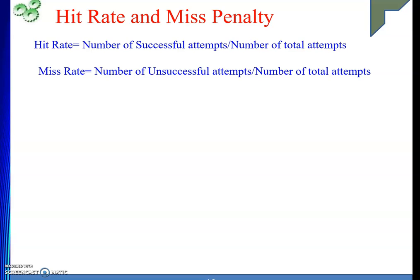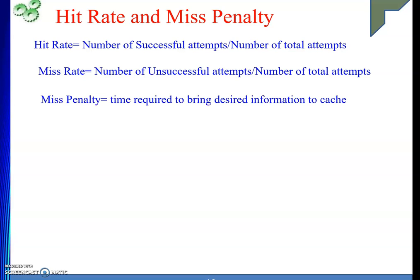Miss rate is opposite to hit rate — how many times we could not get the data. It is the number of unsuccessful attempts divided by total attempts. In that example, 80 times I got the data out of 100 accesses, so miss rate is 20%. Miss penalty is the time taken whenever we fail to get data in cache and need to go to main memory. We bring the data from main memory to cache, and whatever time that takes is the miss penalty.